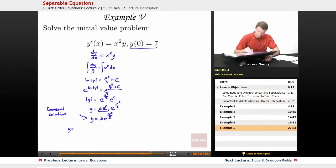So I plug in y is equal to 7, and x is equal to 0. 7 for y, and 0 for x, 0 cubed over 3. But e to the 0 is just 1, so that's equal to k. So I get 7 is equal to k.